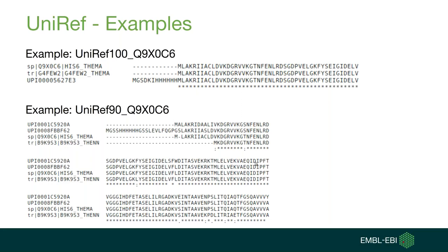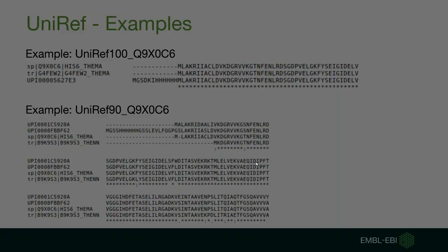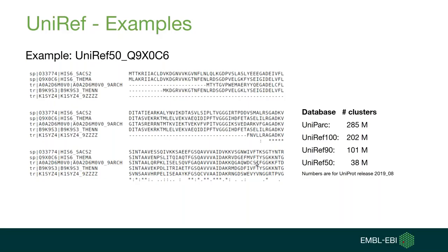This is visualized in the sequence alignment at the bottom of this slide, which contains selected sequences from the UniRef 90 cluster of the same protein. For UniRef 50, the sequence diversity increases even more. As we have more diversity and more protein sequences in one cluster, the database size shrinks from UniParc down to UniRef 50, from 285 million records to 38 million records.